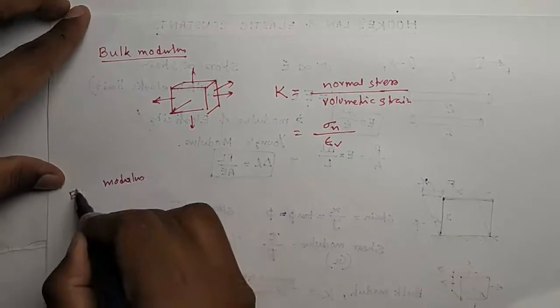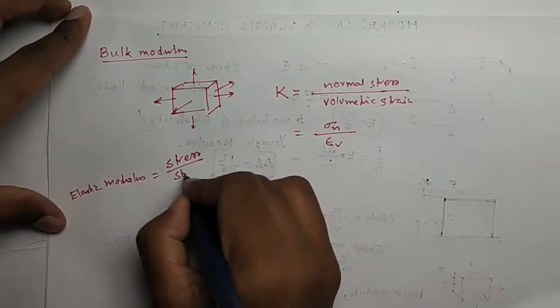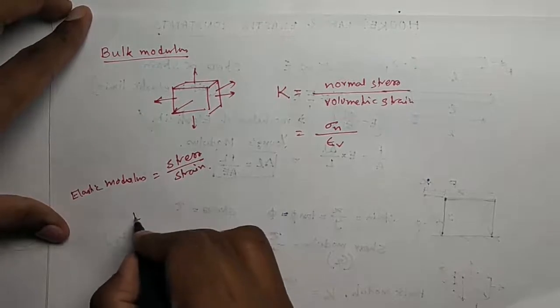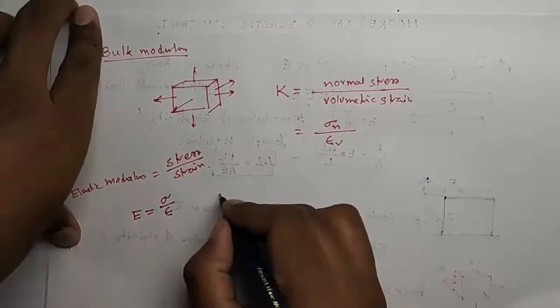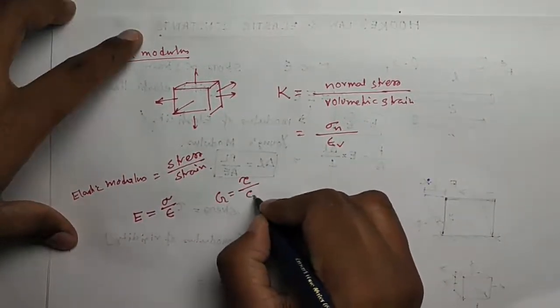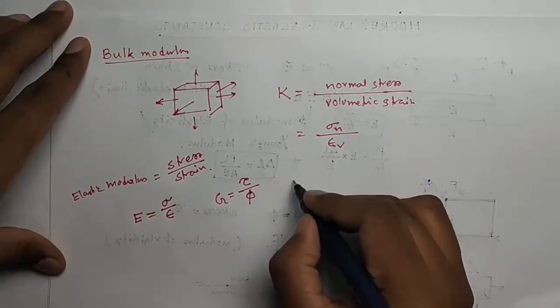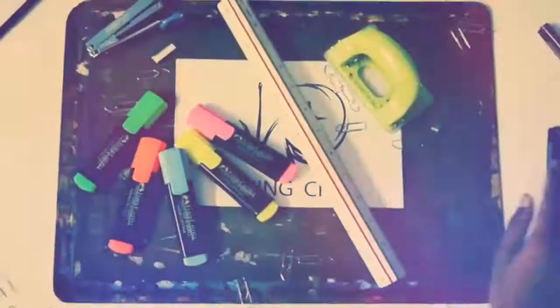So let us discuss in short again. Elastic modulus is nothing but stress by strain. For Young's modulus, E equals direct stress by strain. For shear modulus G, it is the shear stress by shear strain, which is phi. And the bulk modulus K is the normal stress by volumetric strain. Hope you like this video.